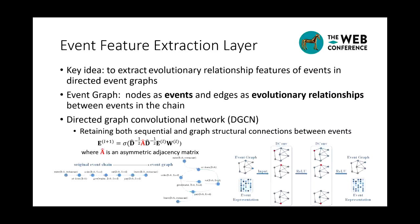In the second part, the key idea is to extract evolutionary relationship features in directed event graphs. We first construct a directed event evolutionary graph based on events, where nodes are events and edges are evolutionary relations extracted from the context event chain. Then we develop a simple but effective directed graph convolutional network, called DGCN. DGCN extends the standard GCN model to directed graphs by using an asymmetric adjacency matrix to represent the actual structure of directed graphs, so as to retain both sequential and graph structural connections between events.